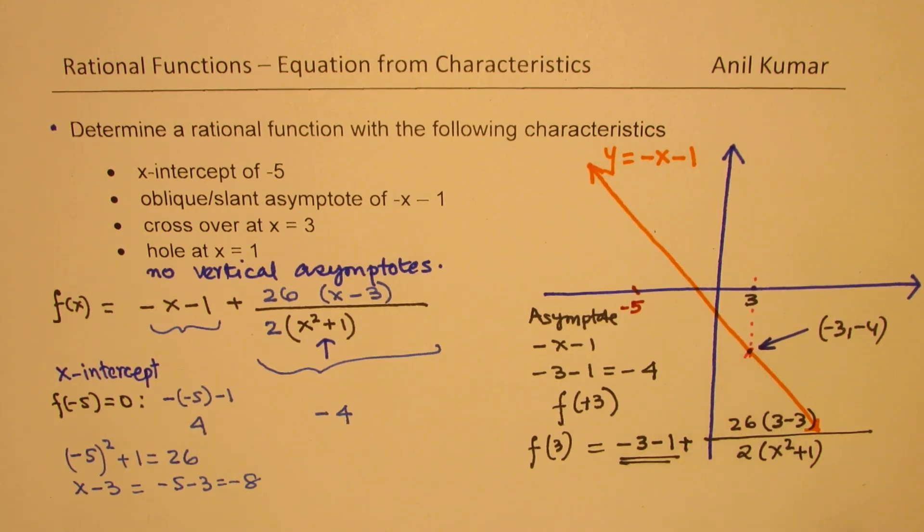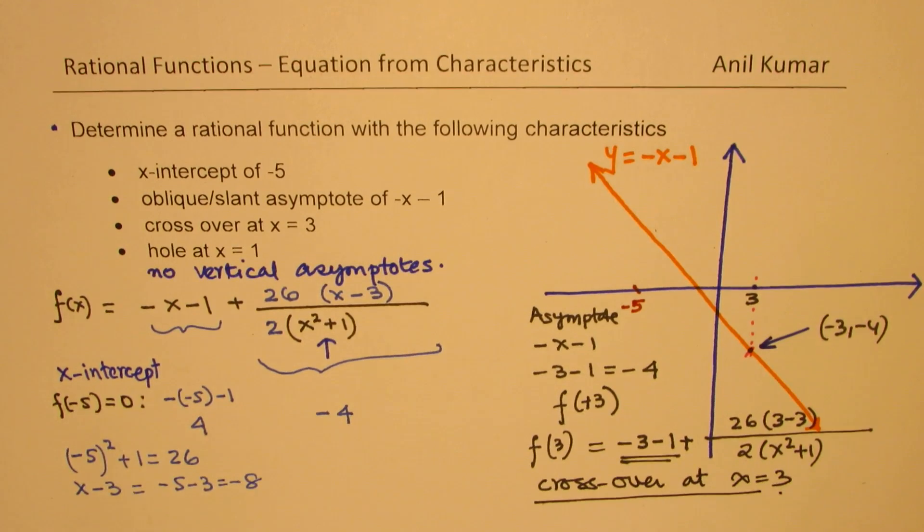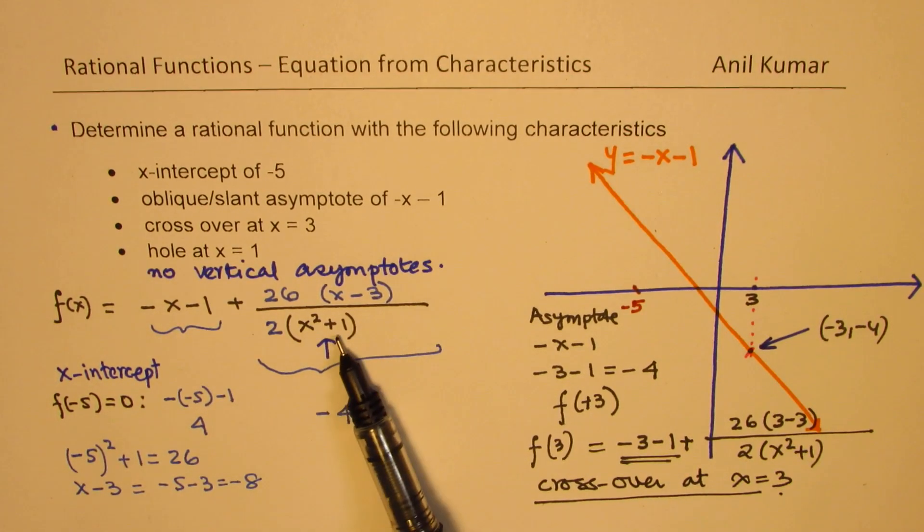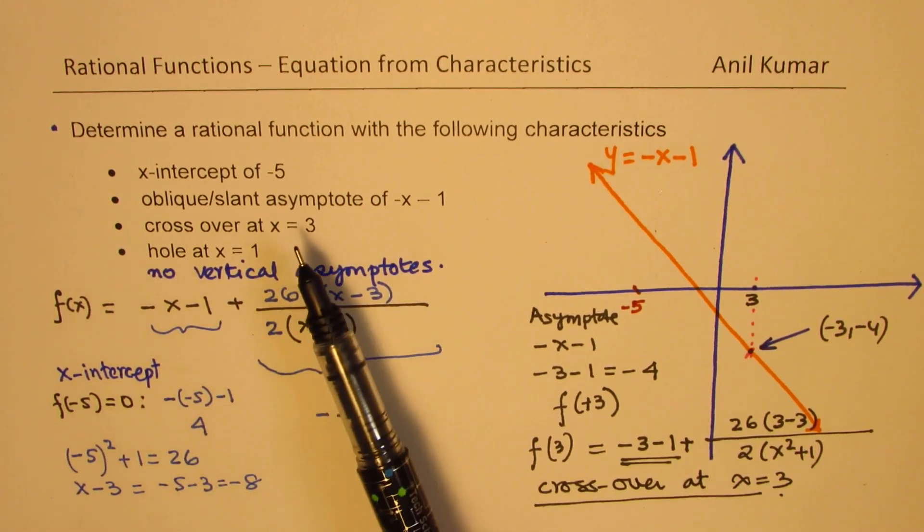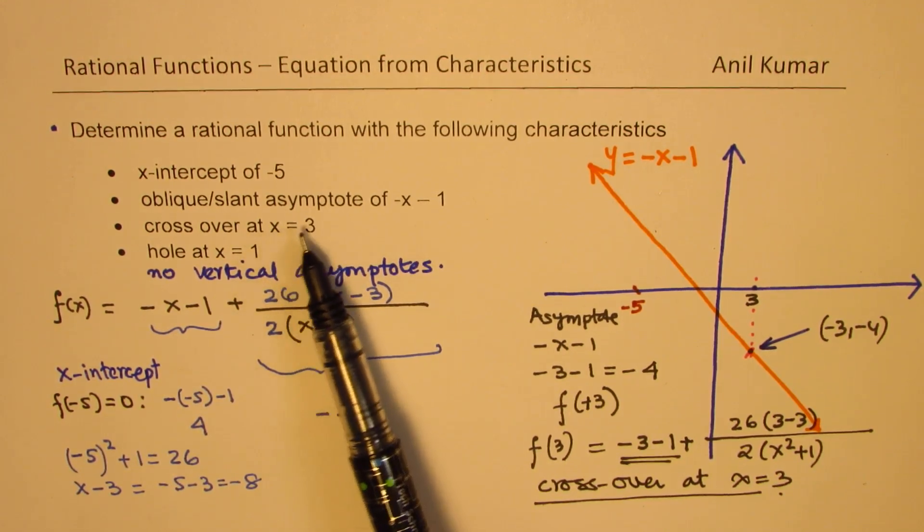We have a common point at this particular place. So that ensures that we have a crossover at x equals 3. Does it make sense to you?